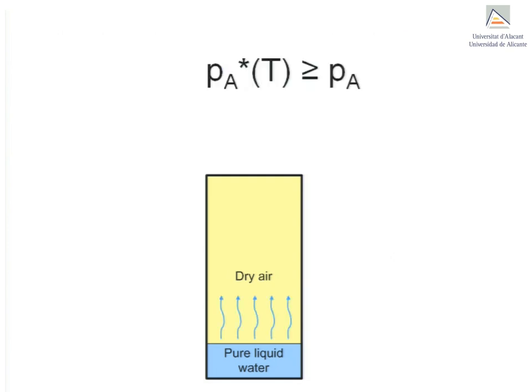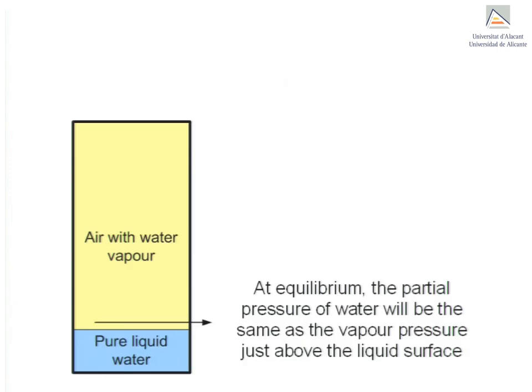Little by little, water vapor evaporates into the air and the humidity of the air becomes higher. In other words, the molar fraction of water in the air increases with every passing moment, and thus the partial pressure increases as well. Note that the partial pressure can never exceed the vapor pressure, which means that in the region just above the liquid surface, the partial pressure will vary from zero initially to the vapor pressure at equilibrium.